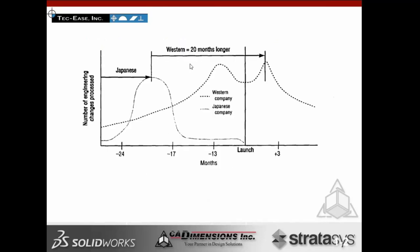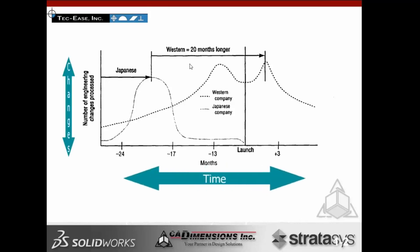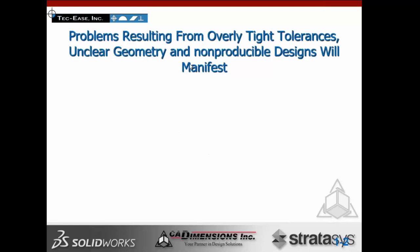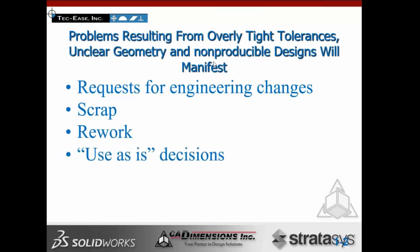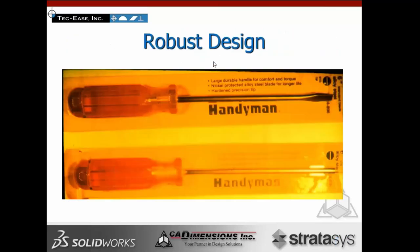Looking at this graph, we can see that the Japanese launch products a lot quicker than Western countries — maybe 20 months faster. Problems resulting from overly tight tolerances, unclear geometry, and unproducible designs manifest as requests for engineering changes, scrap, rework, and use-as-is decisions. Here's an example: I got a great deal on a screwdriver set — two for one — but when I got home, I realized the driver on one was misinserted in the handle. That's not a robust design.